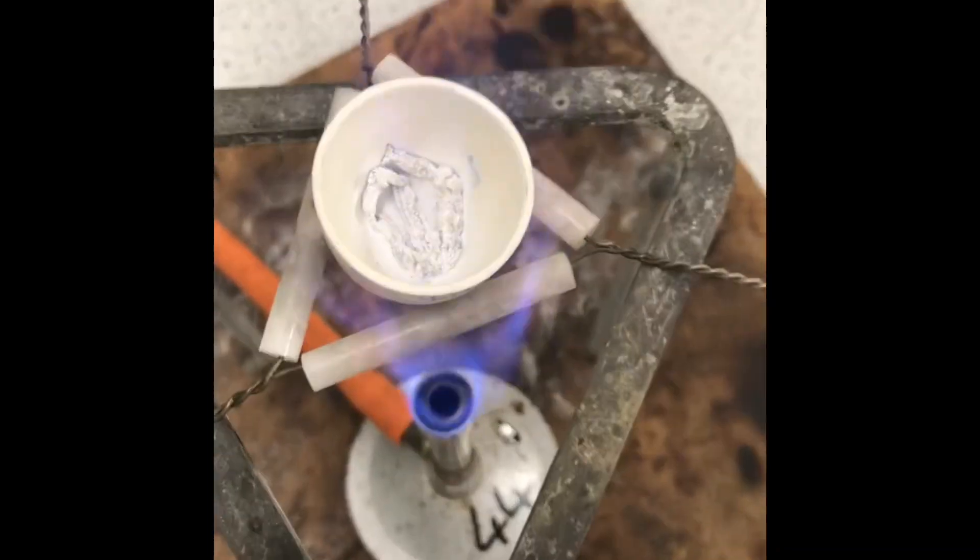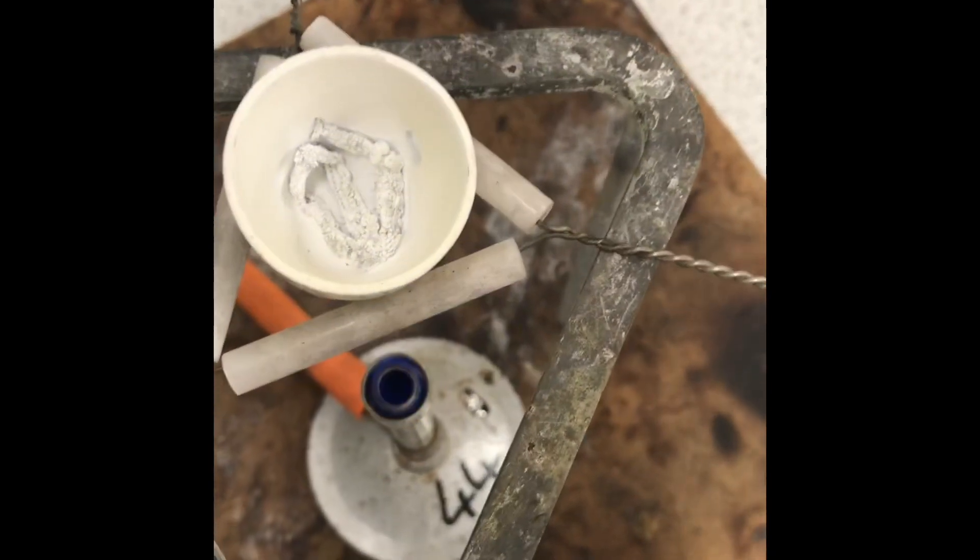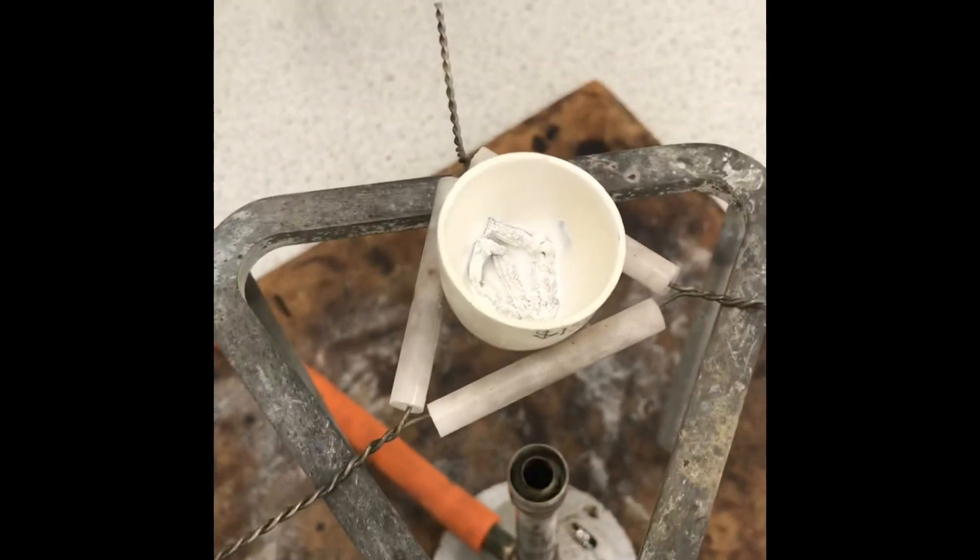As the magnesium oxide has formed, the reaction is now complete, so I can turn off my Bunsen burner and remove the crucible from the heat.